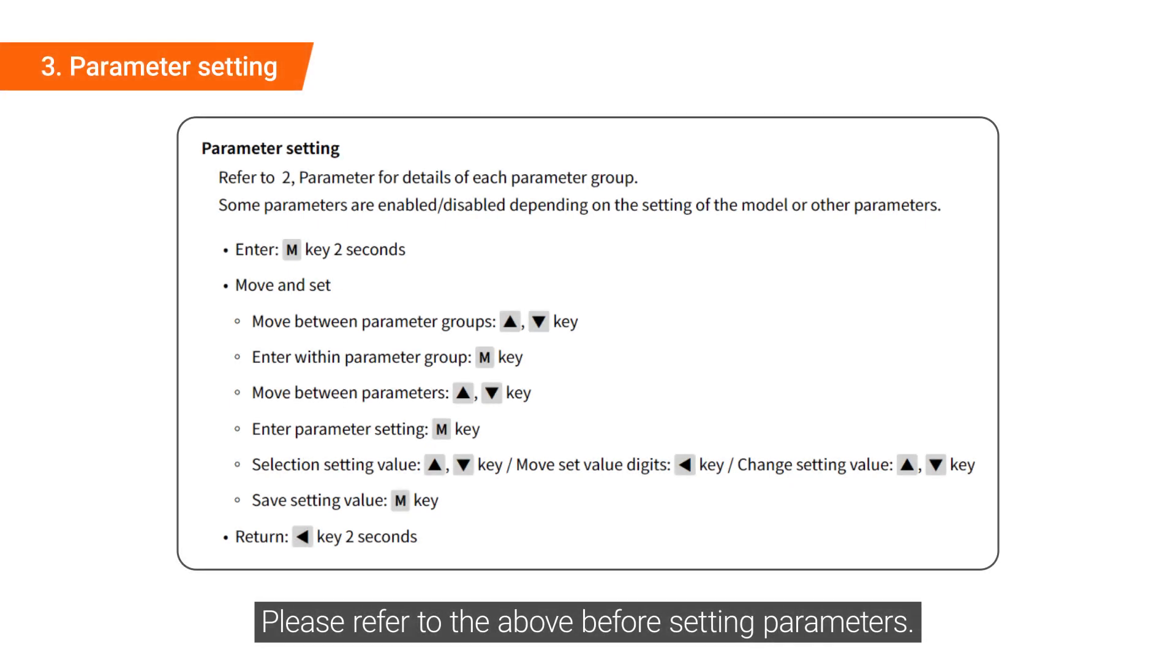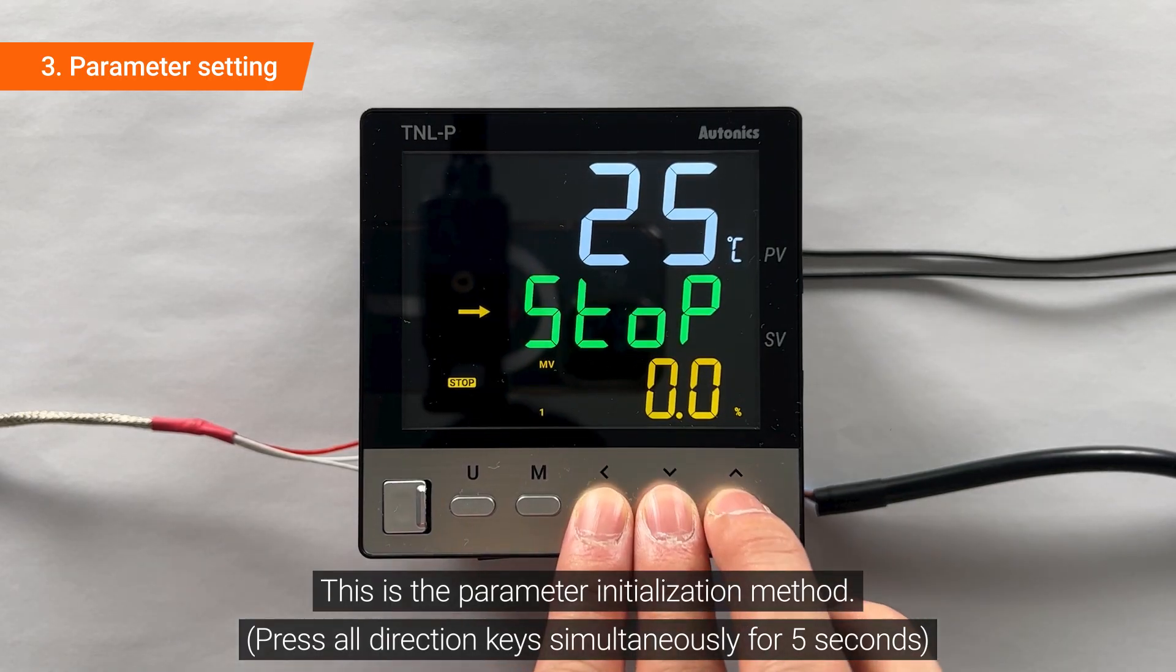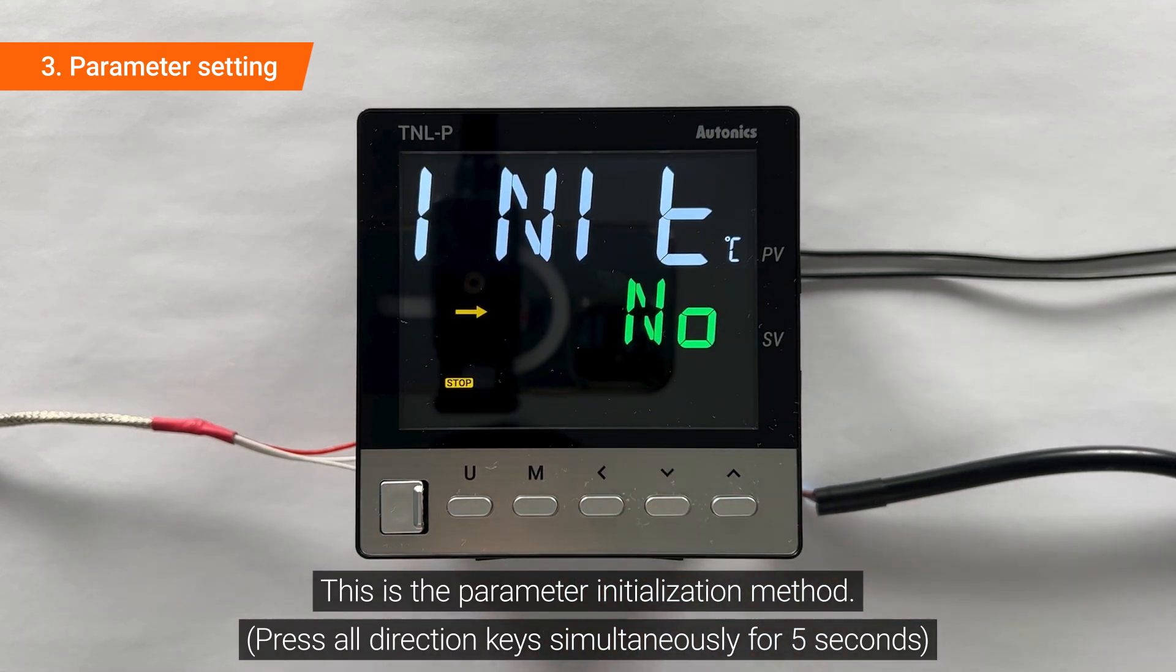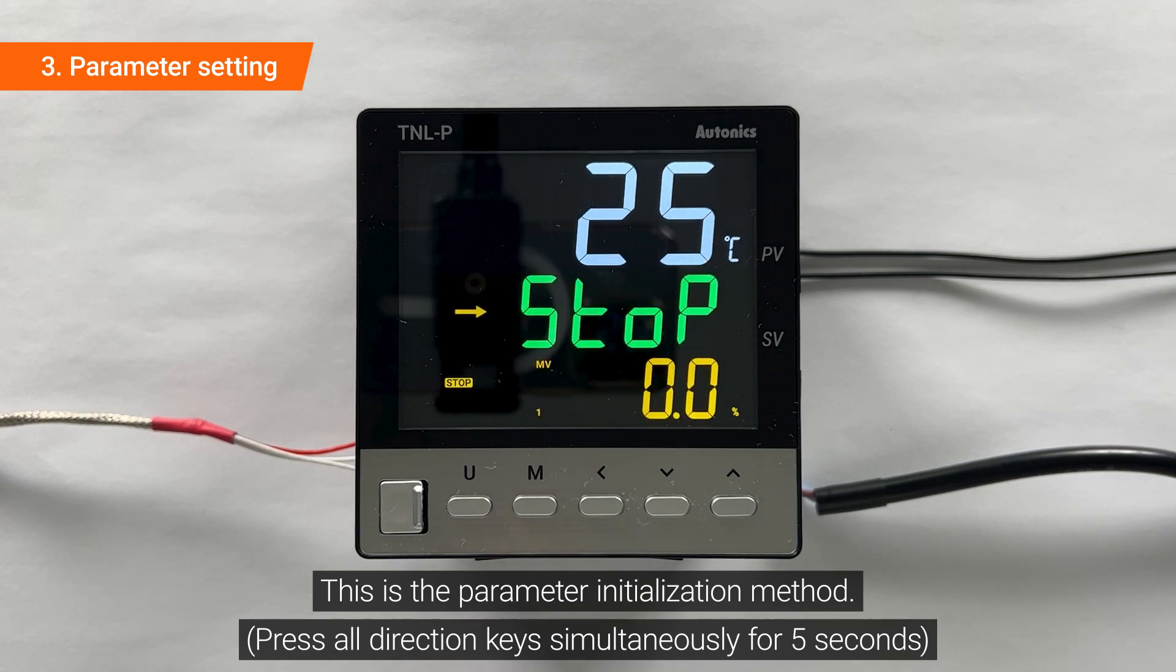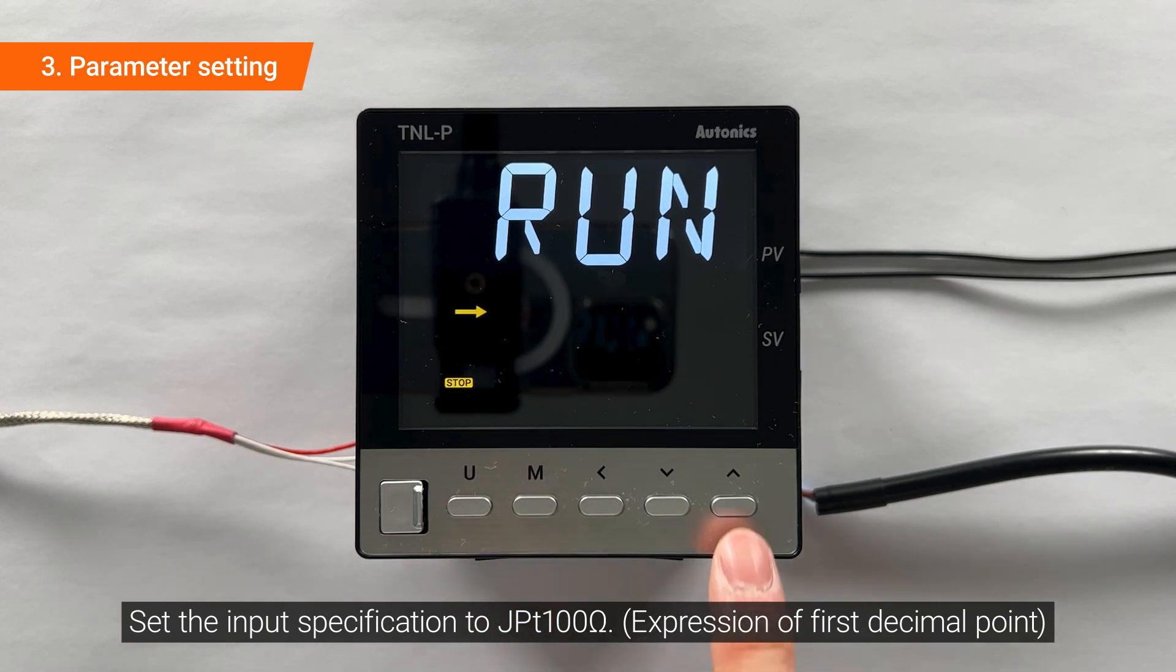Please refer to the above before setting parameters. This is the parameter initialization method. Set the input specification to JPT 100 Ohm.